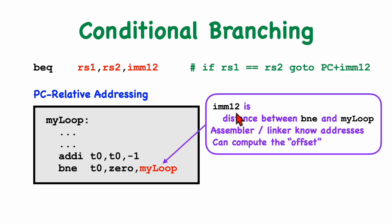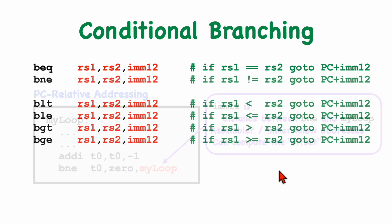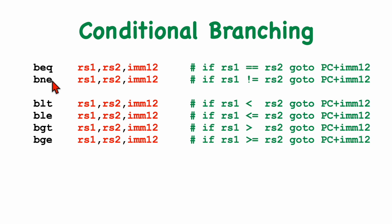The immediate value in the instruction is the distance between the branch instruction itself and the target address. The assembler and/or linker will know both of these addresses and therefore can compute the difference — that is, the offset — and figure out what exactly to place into the instruction. So we saw the branch on equal and the branch on not equal, and we also have branch less than, branch less than or equal, branch greater than, and branch greater than or equal. These compare the values using signed comparison and jump if the condition is met.